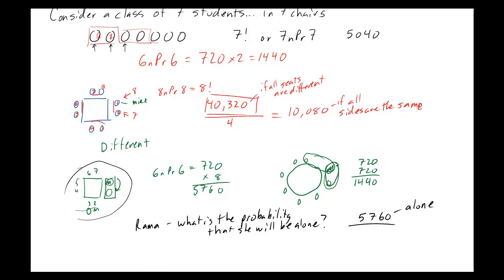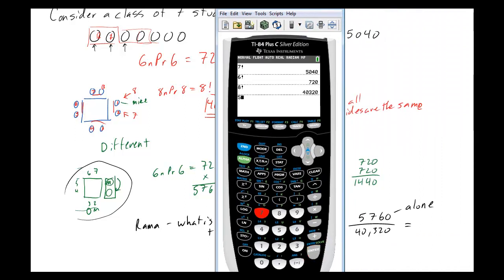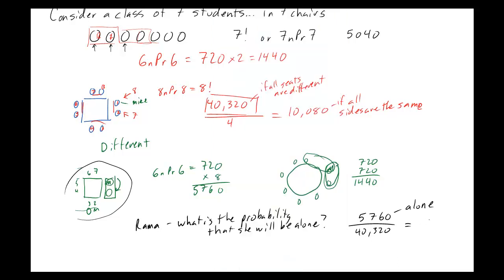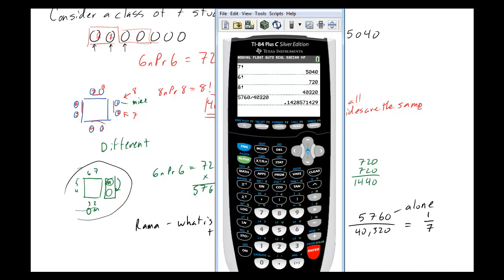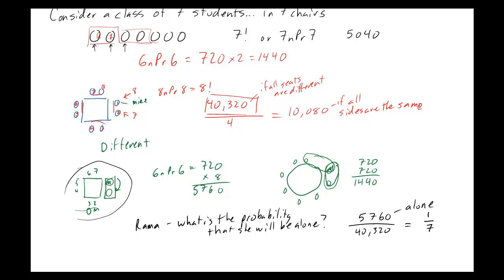And then how many total possible ways could they be seated? Well, they could be seated in 40,320 different possible ways. And so if we take that and we calculate 5,760 divided by 40,320, we get 0.142857, which is 1 out of 7. You could go into your math and turn it into a fraction for me please, and it gives us 1/7. Now, you probably didn't need to do this, because there's always going to be one person sitting by themselves. And so one of the seven students is going to be alone. So what's the probability that Rama will be alone? Well, it's got to be somebody. So 1 out of 7 chance that it's actually her.